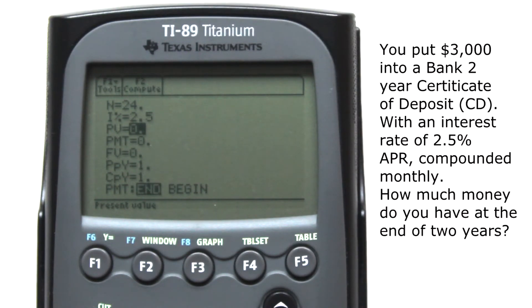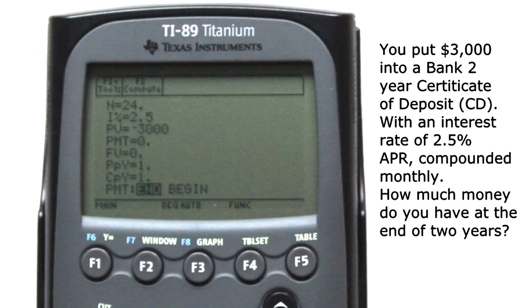PV, Present Value. We take $3,000 out of our pocket and put it into a 2-Year CD. Because we're taking money out of our pocket, enter a negative 3,000. Make sure you use a negative sign and not a minus sign. If you use a minus sign, you get a syntax error.